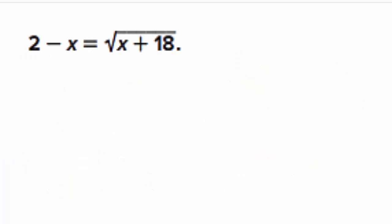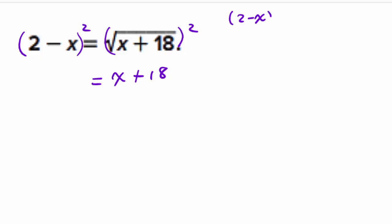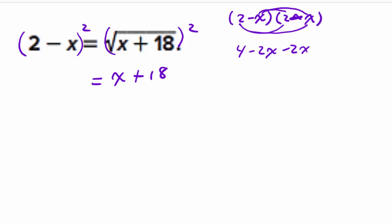For the last example, we end up with a quadratic where we also have to FOIL or multiply a binomial. The square root is already isolated, so we raise both sides to the second power. The right-hand side is simply x plus 18. The left-hand side is (2 minus x) times (2 minus x). FOILing that out: 2 times 2 is 4, 2 times negative x is negative 2x, negative x times 2 is another negative 2x, and negative x times negative x is positive x squared.